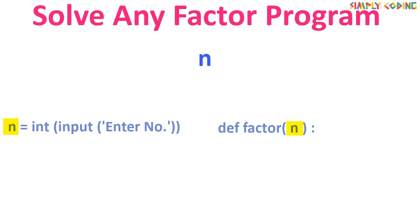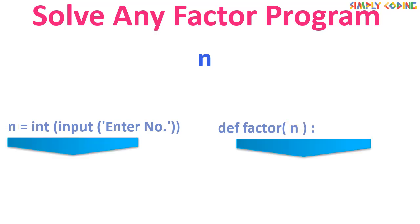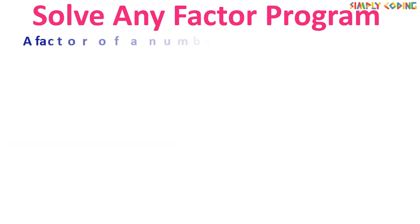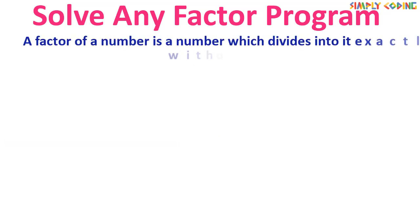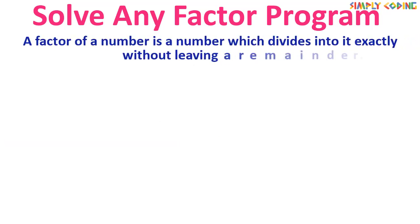I will showcase the code starting from this point, assuming you know how to fit the program in main or a function block. Coming back to finding the factors — a factor of a number is a number which divides into it exactly without leaving a remainder.